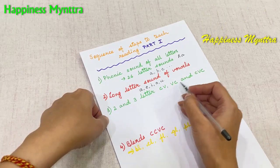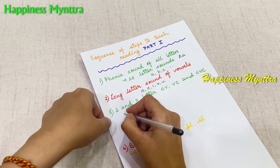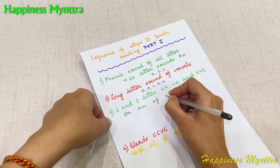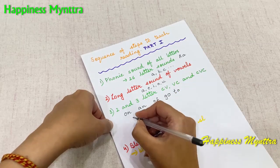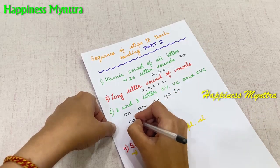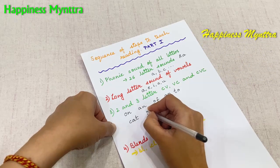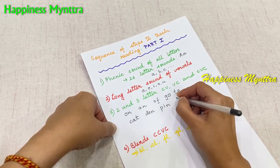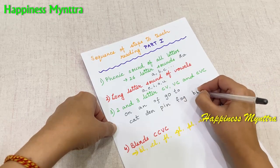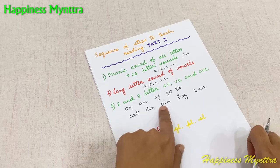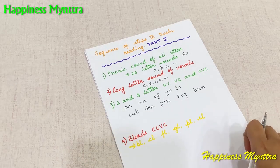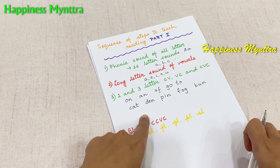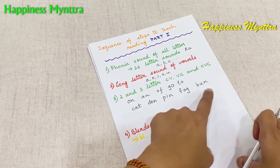Then we go on to the CV, CVC words. So we'll have words like 'on,' 'an,' 'off,' 'go,' 'to,' and of course the CVC words of all the five vowel families. So we'll have the AT family, the E, I, O, and A families — three-letter words of all five families. Children should be familiar with the entire set: AT, AN, AM words, and the same for the E, O, and U families.